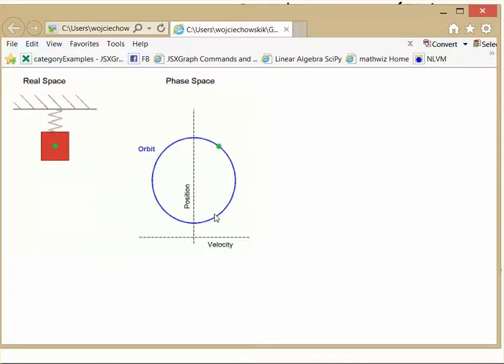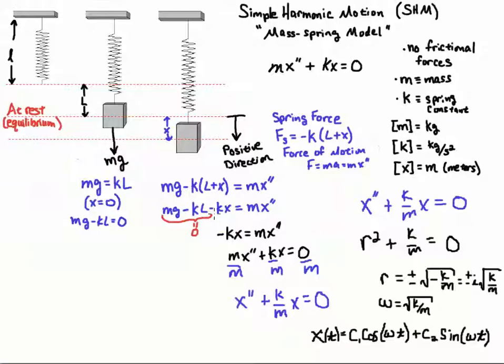Okay, so that's just a quick derivation of the solution for this simple harmonic motion, this rather simple mass-spring model. Okay, good luck.